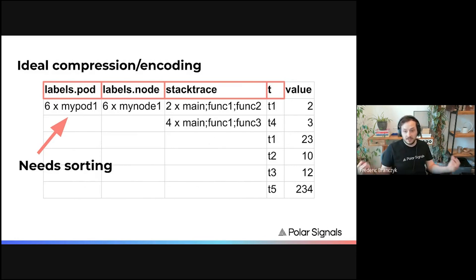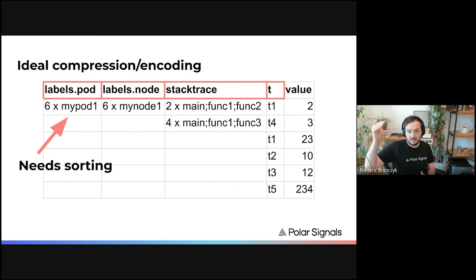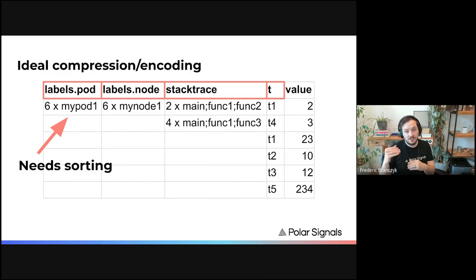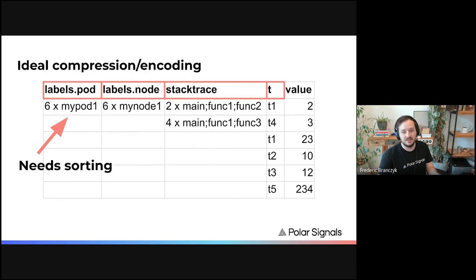To maximally exploit the continuity of data to compress it very well, we needed to additionally sort this data globally, so we can do run-length encoding as much as possible. There are other encodings involved as well — run-length encoding is just one that's very visually representable. How do we maintain global sorting? On a high level, this is how it works: we maintain a sparse index. We don't have a full index of where all values are, but because everything is globally sorted, we just need to know where to jump to within the globally sorted data.